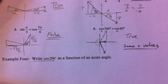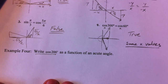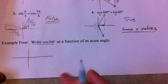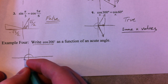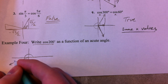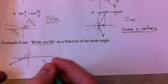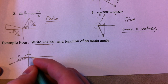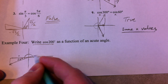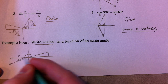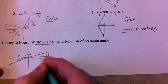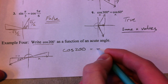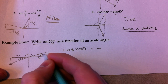Write cosine of 200 as a function of an acute angle — acute meaning less than 90 degrees. Cosine of 200 goes past 180 like that. How much past 180? It's 20 degrees past 180, so that's the x value at 20 degrees. The x value at 200° is negative, where the x value at 20° is going to be positive. So cosine of 200 is equal to negative cosine of 20.